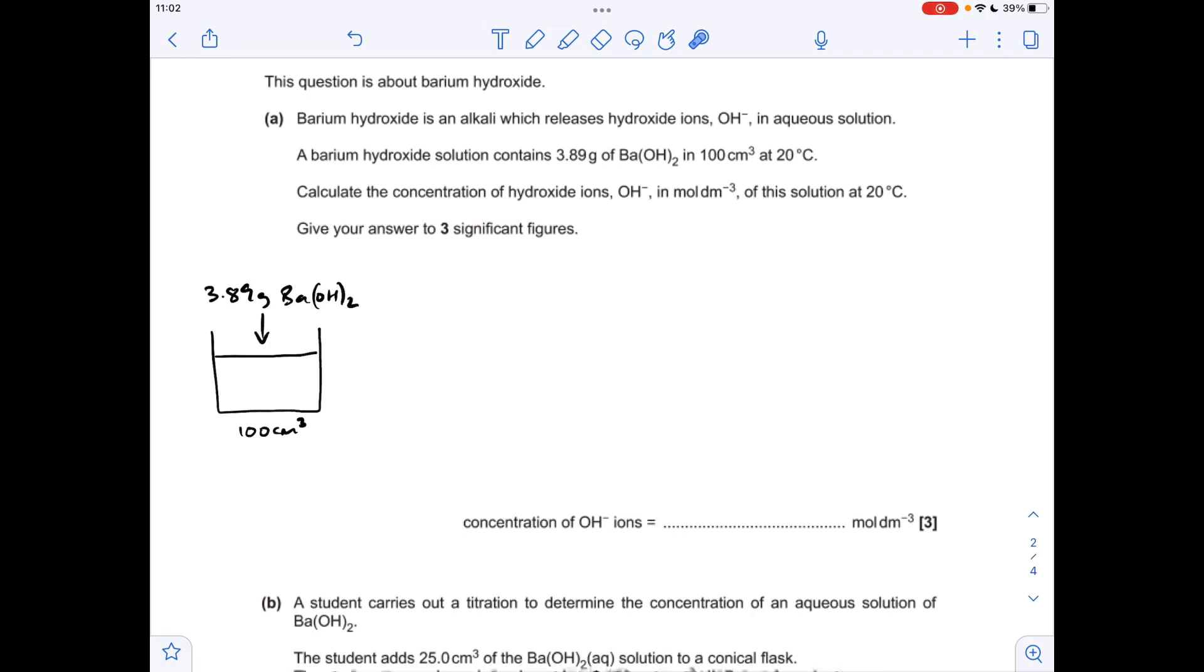Moving on to the next question. So I've got my usual visualization. So we've got 3.89 grams of barium hydroxide and that's been dissolved in 100 cm cubed of water. So the first thing I'm going to do is look at how many moles of barium hydroxide that is. So mass over MR is giving 0.02271 moles.